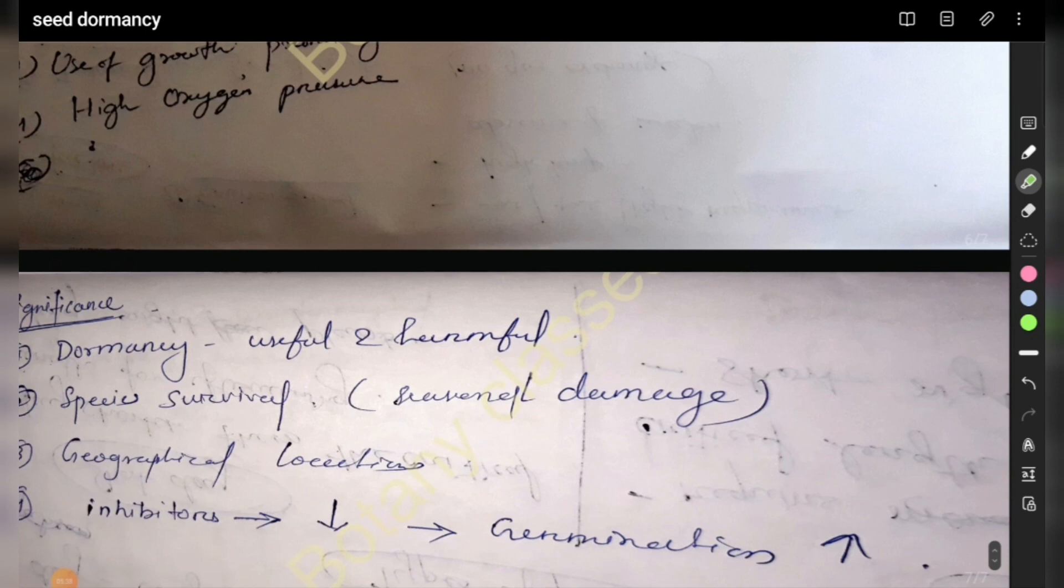The significance of dormancy can be useful and harmful. Useful conditions include drought situations where dormancy is beneficial.